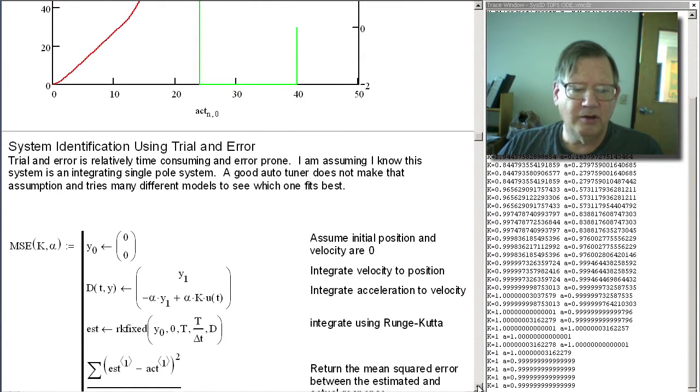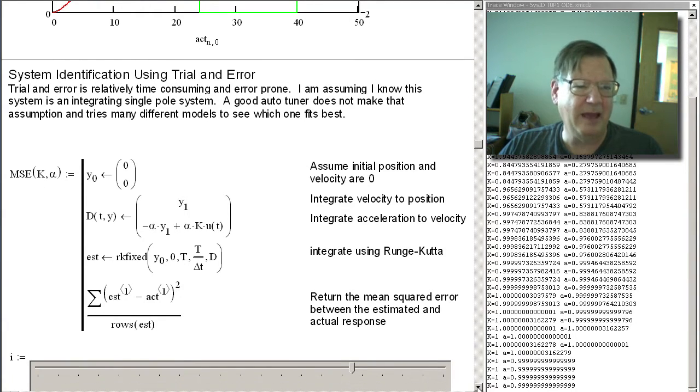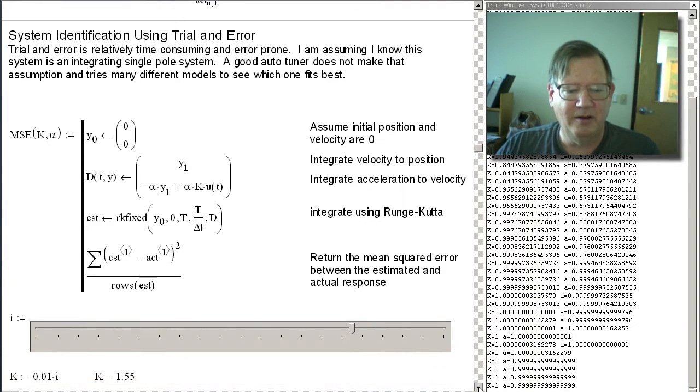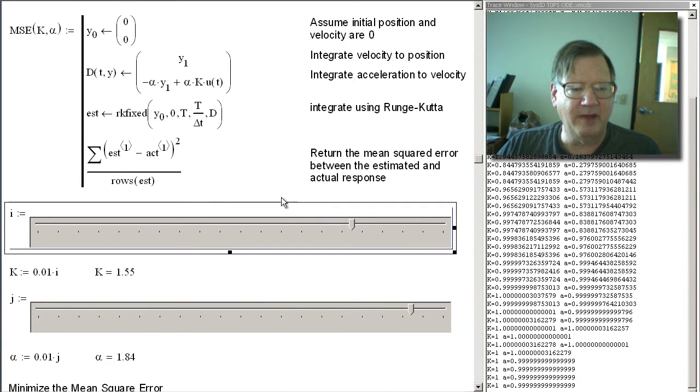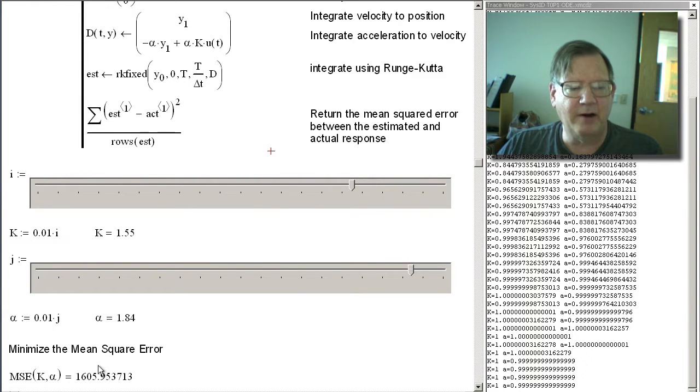Now, we could try different variable values for k and alpha randomly, or we can try it manually by playing a game like guessing a number between 1 and 100. And basically that's what we're going to do here. I have two sliders to make changing the gains easy. Right now I have the slider set so that the gain is set to 1.55, which we know is not right, and we have the frequency set to 1.84. But most significantly the mean squared error is 1600.